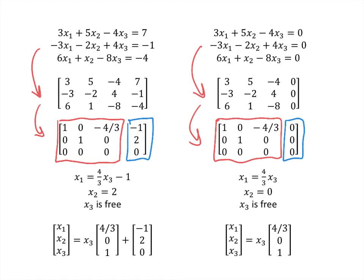When we write our solutions in equation form, notice the difference: the non-homogeneous system has constants negative one and two, whereas the homogeneous system has no scalars and x2 equals zero. When we write those solutions in vector form, the solutions look the same except that the non-homogeneous system has this extra term, the vector (-1, 2, 0).